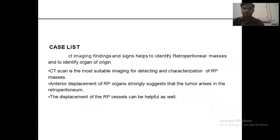CT scan is the most suitable imaging modality for detecting and characterization of retroperitoneal masses. Anterior displacement of the retroperitoneal organ strongly suggests that the tumor arises in the retroperitoneum. The displacement of retroperitoneal vessels can also be helpful.